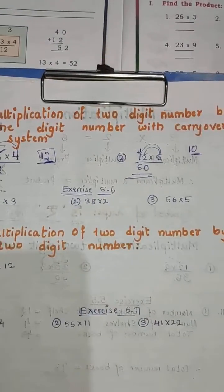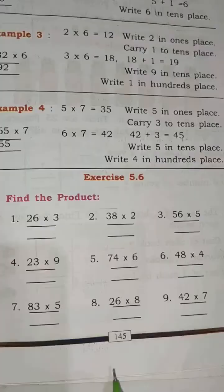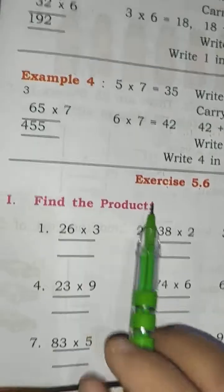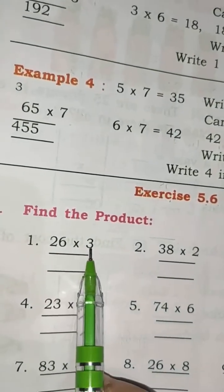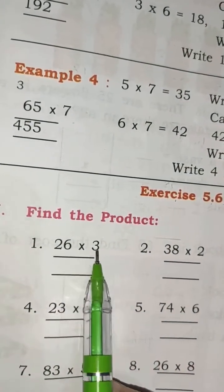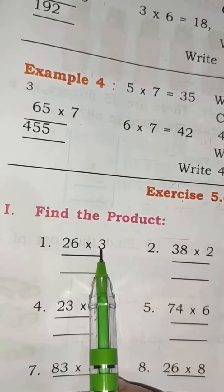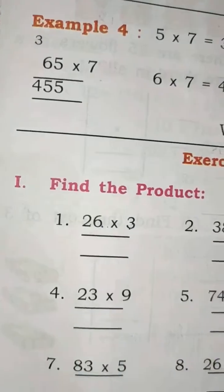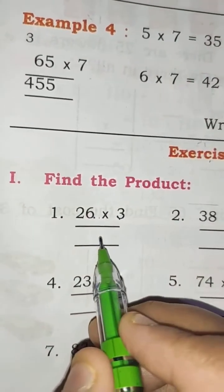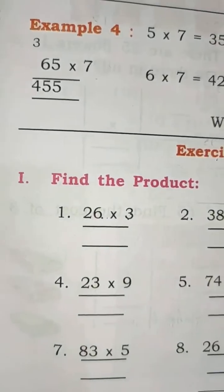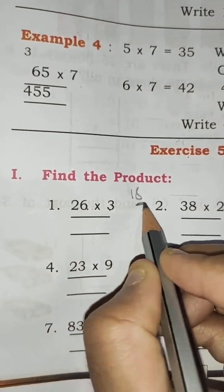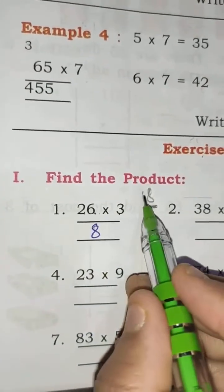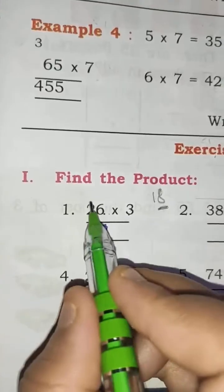Now let us take some examples. Open page number 145, Exercise 5.6 — find the product. 26 into 3. First, 3 sixes are 18. We can't write 18 directly here. The right number 8 is written here first, and 1 will carryover to the next place.